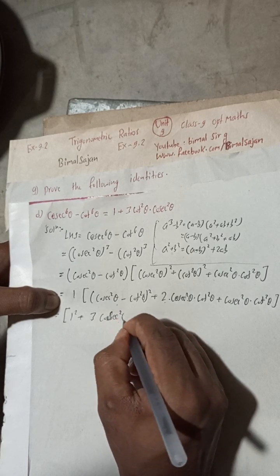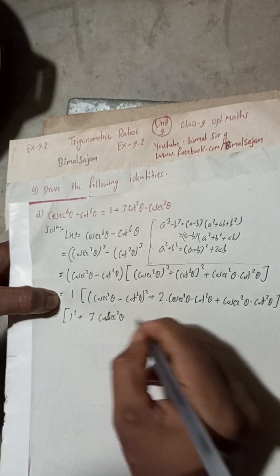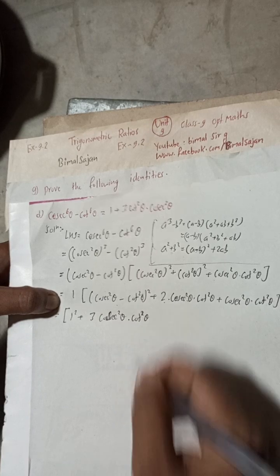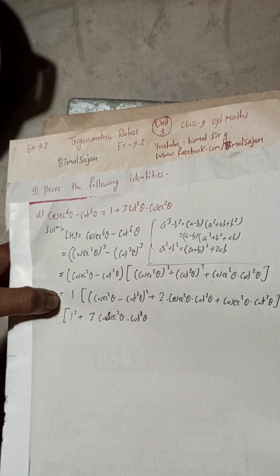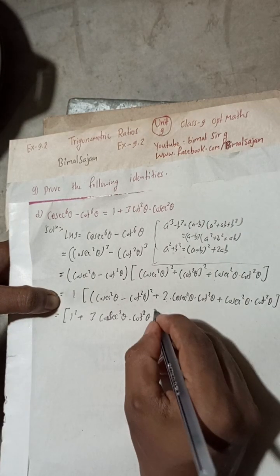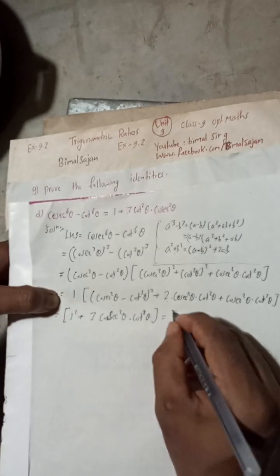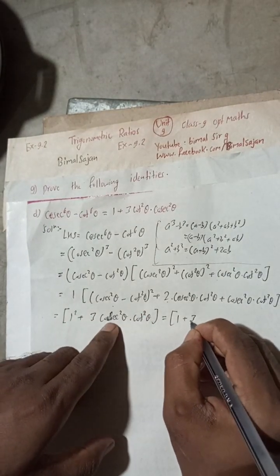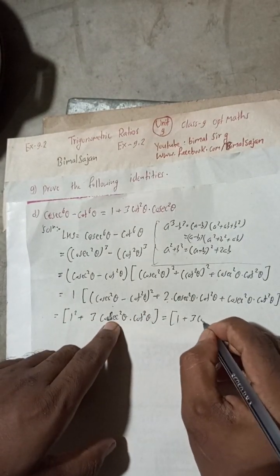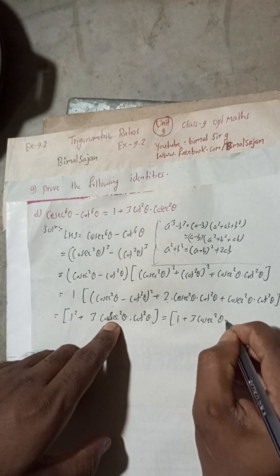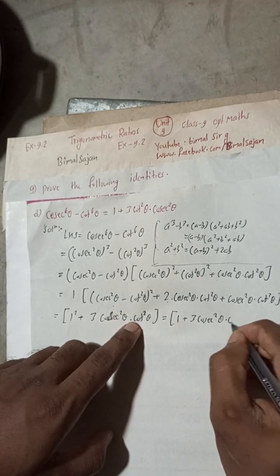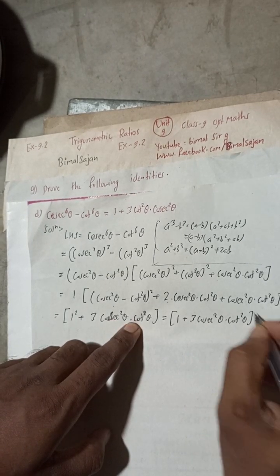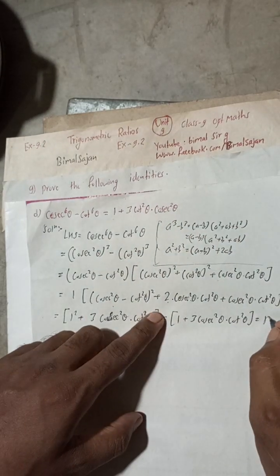So we get 3cosec²θ times cot²θ. Closing the bracket, and 1² equals 1, so we have: 1 plus 3cosec²θ times cot²θ, which equals the RHS. Proved.